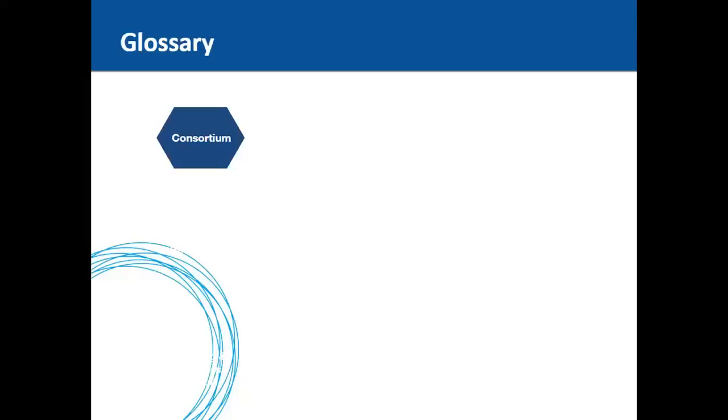A consortium requires partners from three different member states and associated countries, including international partners, and one of the consortium partners will be the project coordinator. Once your proposal has been selected for funding, the partners which make up the consortium are now referred to as beneficiaries.